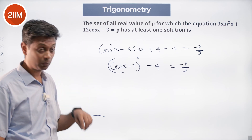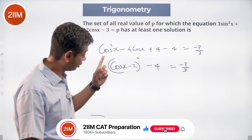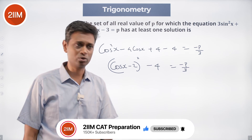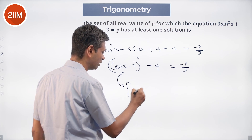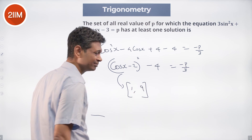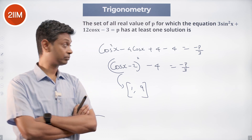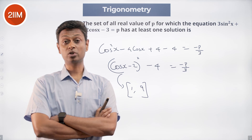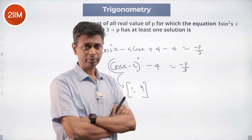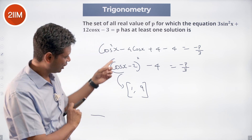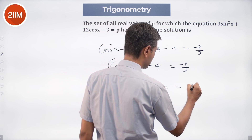Now cosx ranges from -1 to +1. When cosx = -1: (-1 - 2)² = (-3)² = 9. When cosx = +1: (1 - 2)² = (-1)² = 1. So (cosx - 2)² ranges from 1 to 9. Subtracting 4, the expression (cosx - 2)² - 4 equals -p/3, and this ranges from 1 - 4 = -3 to 9 - 4 = 5.